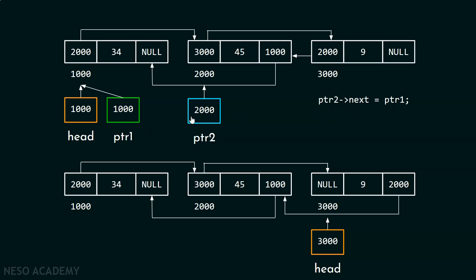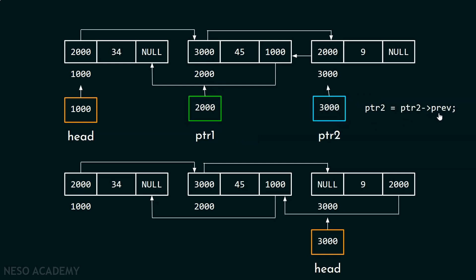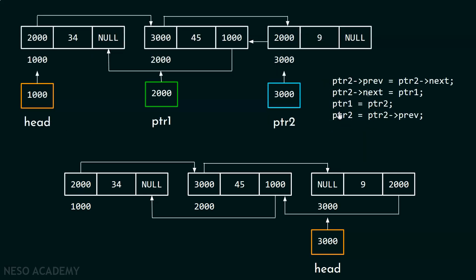After this, we have to move our pointers towards the right. First we will move ptr1 so that it can point to the second node, and then we will move ptr2 so that it can point to the third node using ptr2 prev. So, ptr2 is equal to ptr2 prev. Now ptr2 is pointing to the third node. We repeat the same code: ptr2 prev equal to ptr2 next — and since ptr2 next is null, we place null there. Then ptr2 next equal to ptr1, placing address 2000 over here.